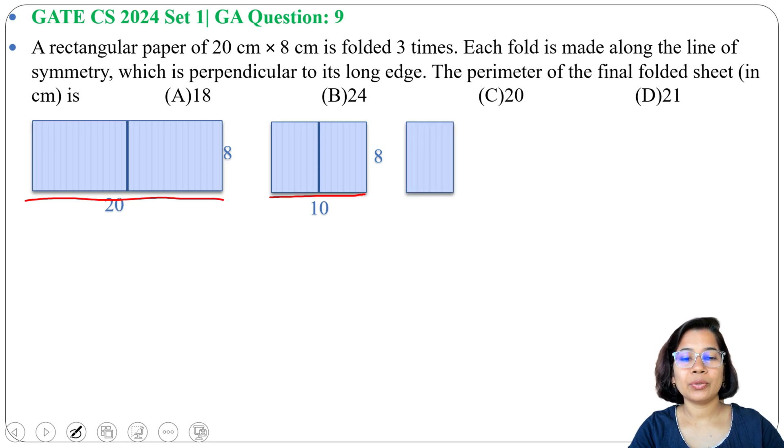So after folding we will get 5 × 8 rectangular sheet. So here this is 5, this is 8. Now this 8 is the longest. So we will fold perpendicular to this 8 cm. After fold we will get this sheet.